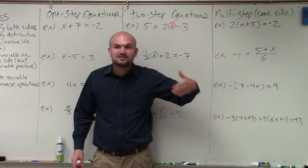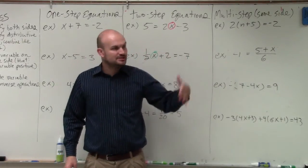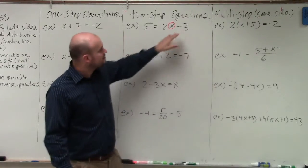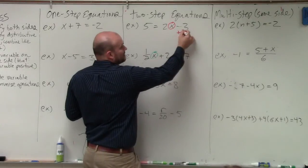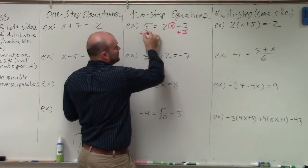The reverse order of operations will tell us that we need to undo addition and subtraction first. So for this variable, I can see that my variable is being subtracted by three. So to undo subtraction, I am going to add.